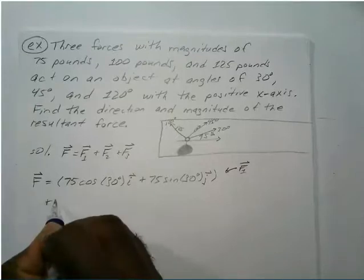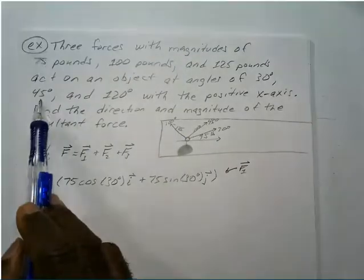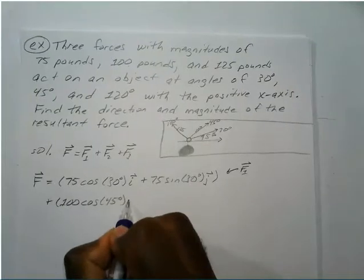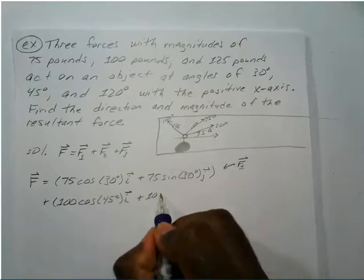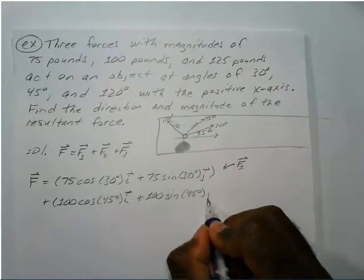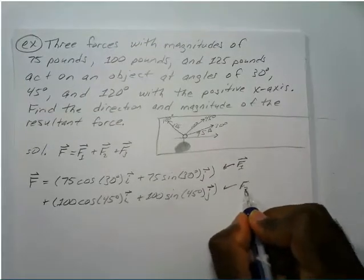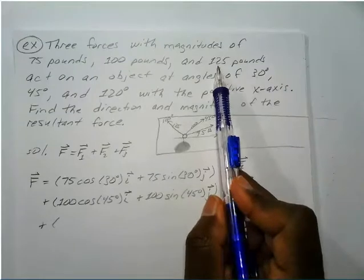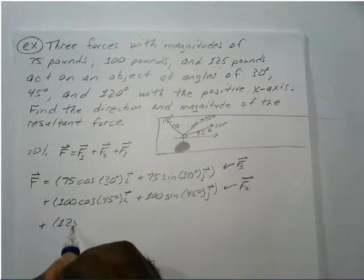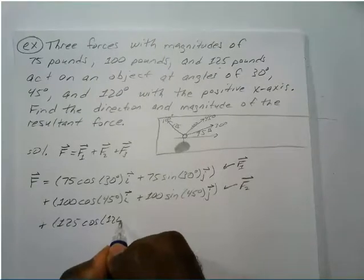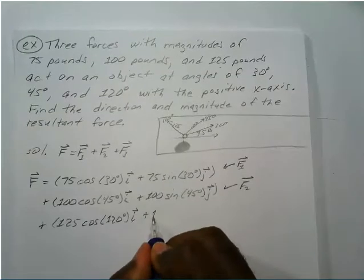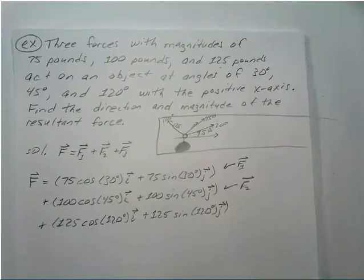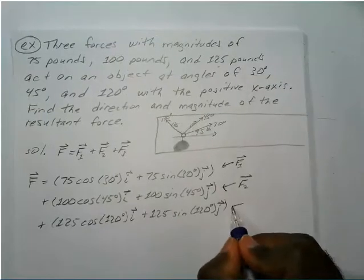The second force is 100 pounds at 45 degrees: 100 cos(45°) times the i vector, plus 100 sin(45°) times the j vector. The third force is 125 pounds at 120 degrees: 125 cos(120°) times the i vector, plus 125 sin(120°) times the j vector.